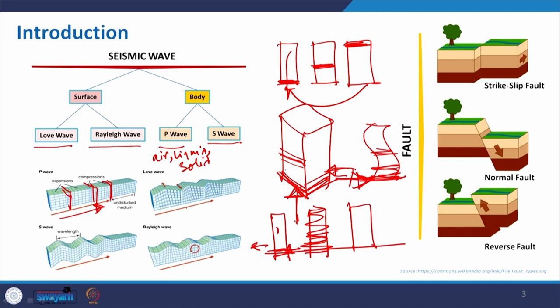Coming to the love wave — the movement of the soil shifts from one place to another with some displacement. The Rayleigh wave is a rotational wave that forms and expands. During an earthquake, all of these happen together, creating a shaking that is very repetitive and very fast.